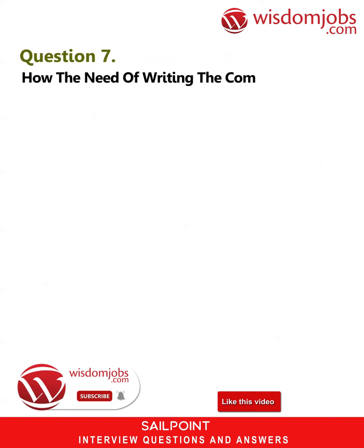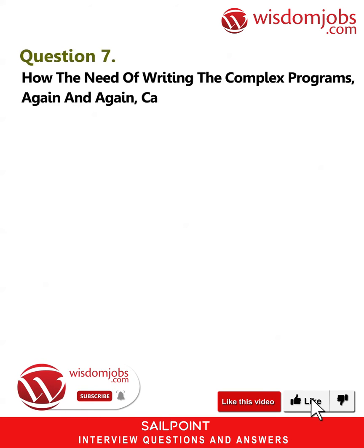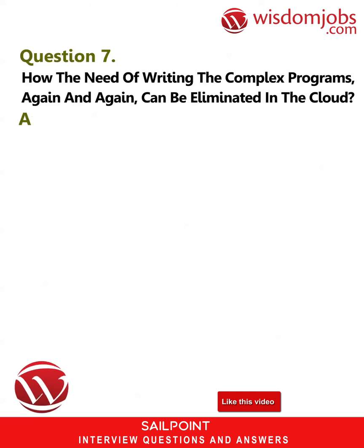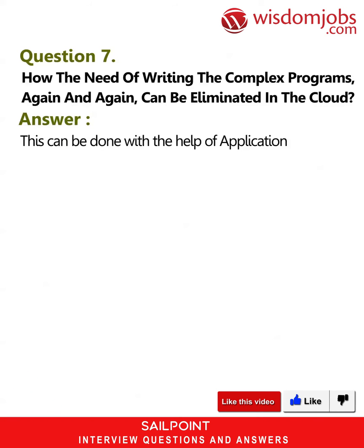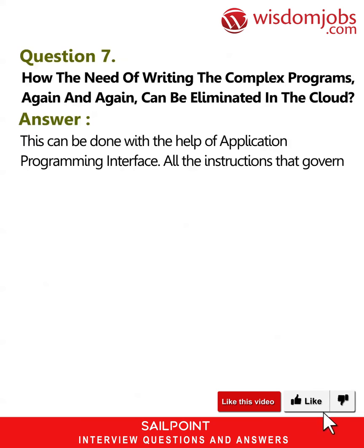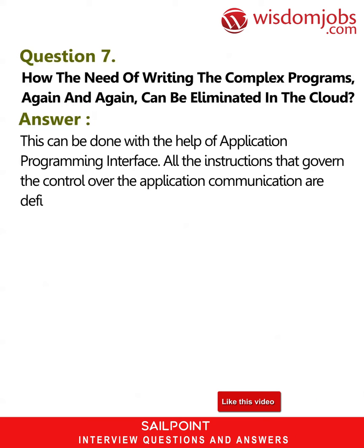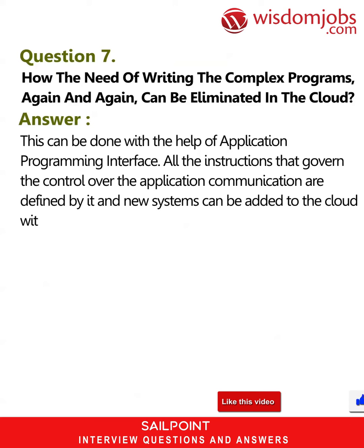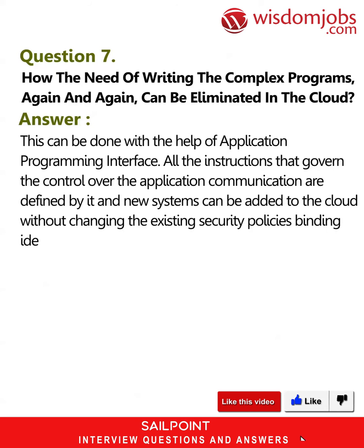Question 7: How can the need for writing complex programs again and again be eliminated in the cloud? This can be done with the help of Application Programming Interfaces (APIs). All the instructions that govern control over application communication are defined by the API, and new systems can be added to the cloud without changing the existing security policies for binding identification and access management.